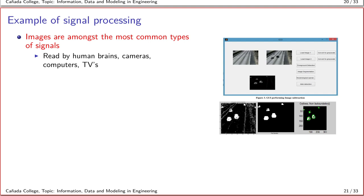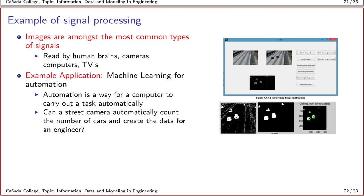Here's an example of signal processing in the context of machine learning, which is fundamental to robotics. One of the most common types of signals that we are familiar with are images. We read images with our brain through our eyesight, captured through cameras or TV screens. Images are among the most common types of signals we are familiar with.